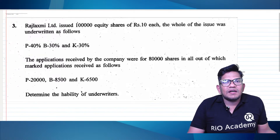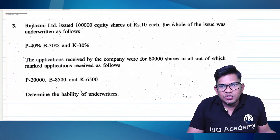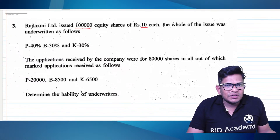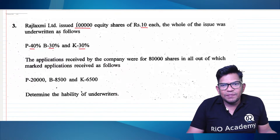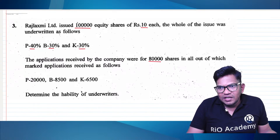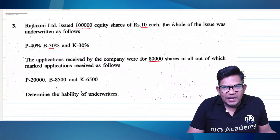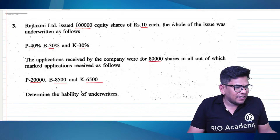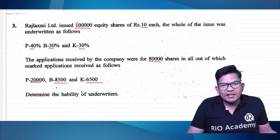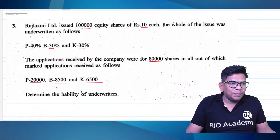Raj Lakshmi issued one lakh equity shares of 10 each. The whole issue was underwritten as follows: K 40%, P 30%, and B 30%. Applications received by the company were 80,000. Out of which marked applications were: 20,000, 8,500, and 6,500. Determine the liability of the underwriters.